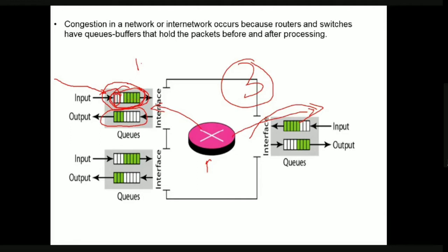The router processes packets step by step: first the packet is placed in the input queue; second, the processing module removes the packet from the front of the queue and uses the routing table to find the destination address; third, the packet is placed in the appropriate output queue and waits for its turn to be sent.